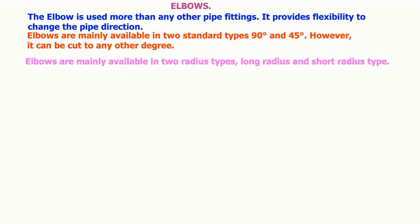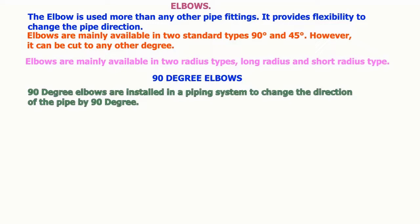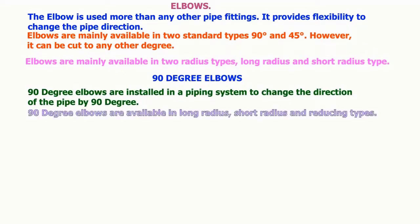90 degree elbows are installed in a piping system to change the direction of the pipe by 90 degrees. 90 degree elbows are available in long radius, short radius, and reducing types.